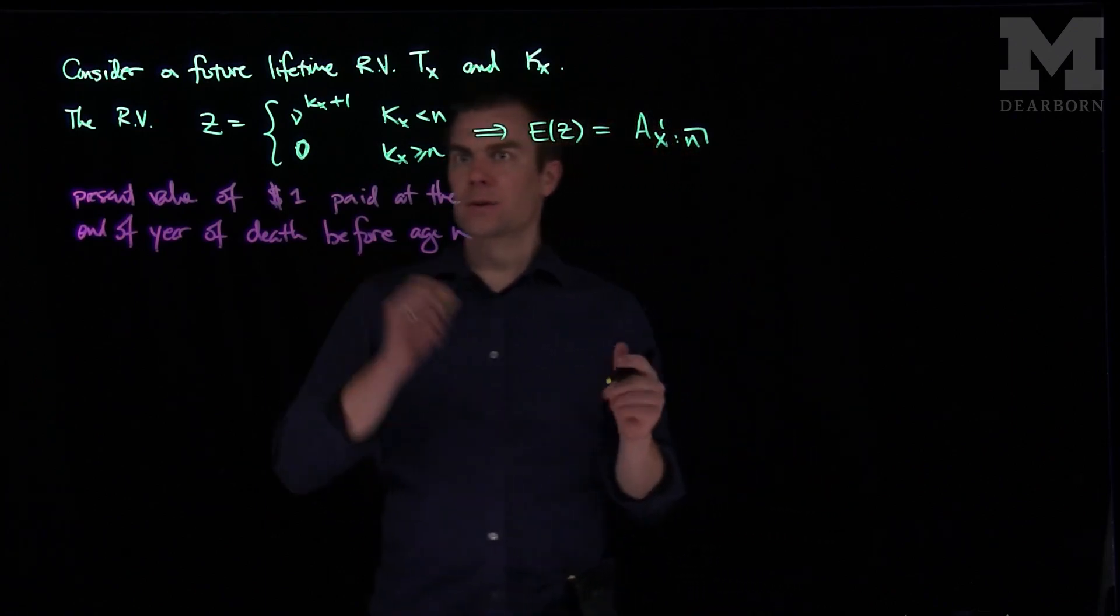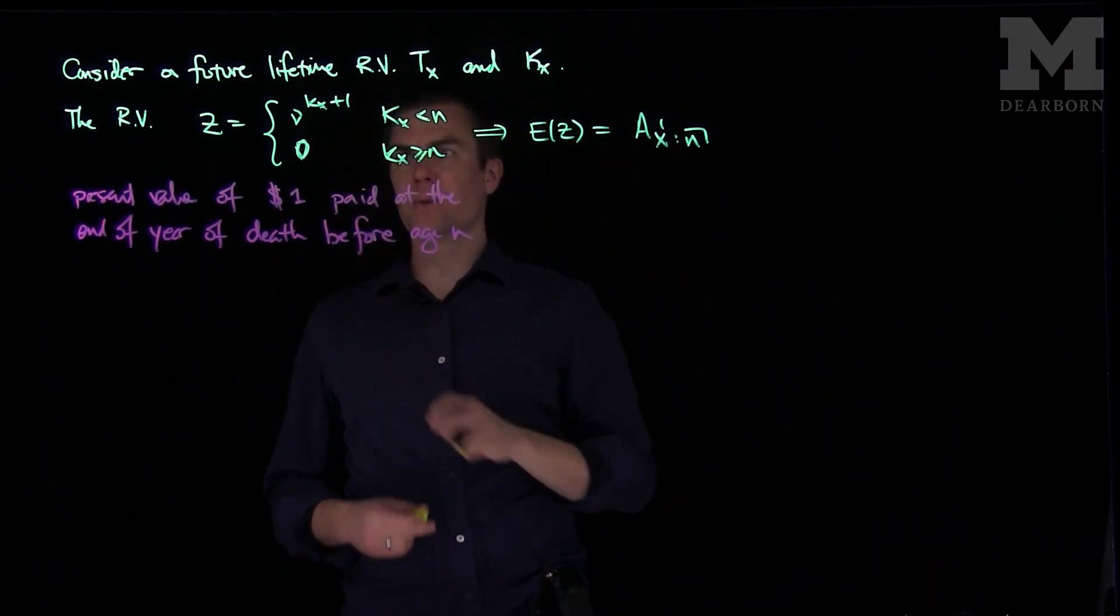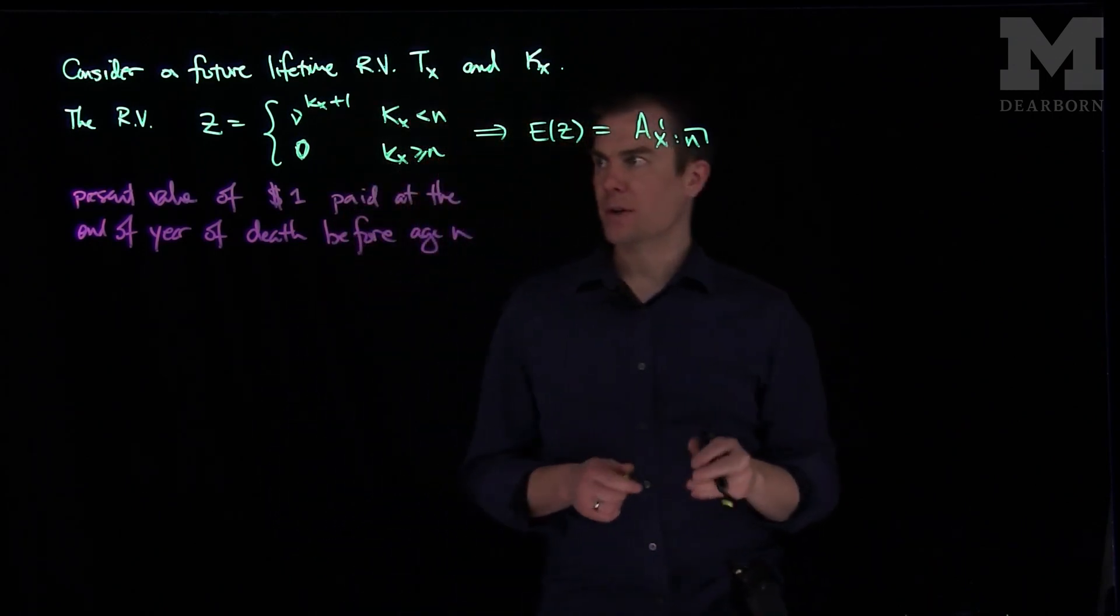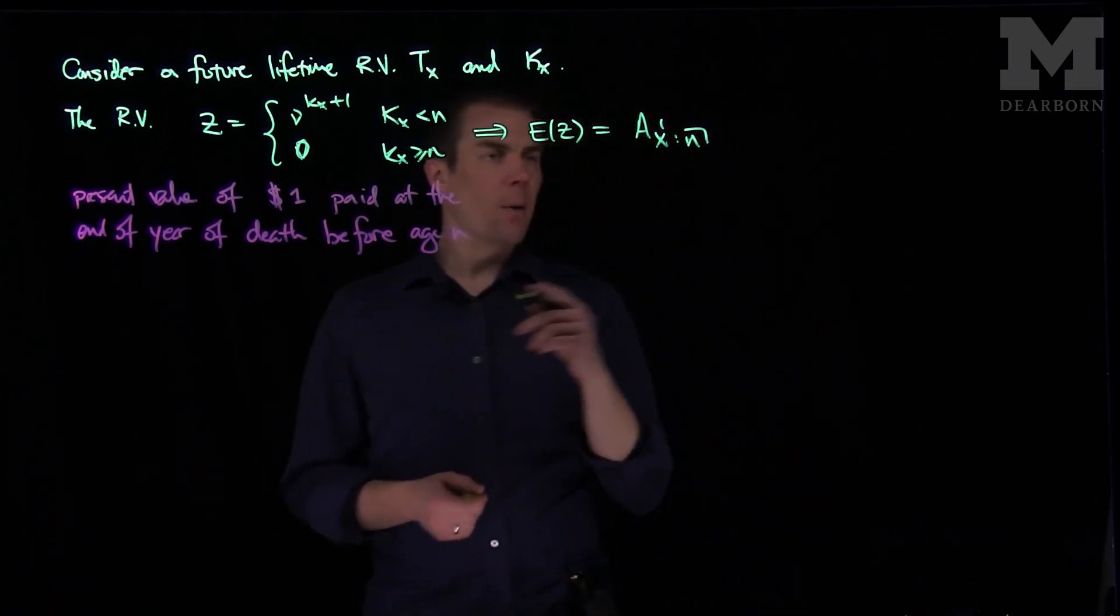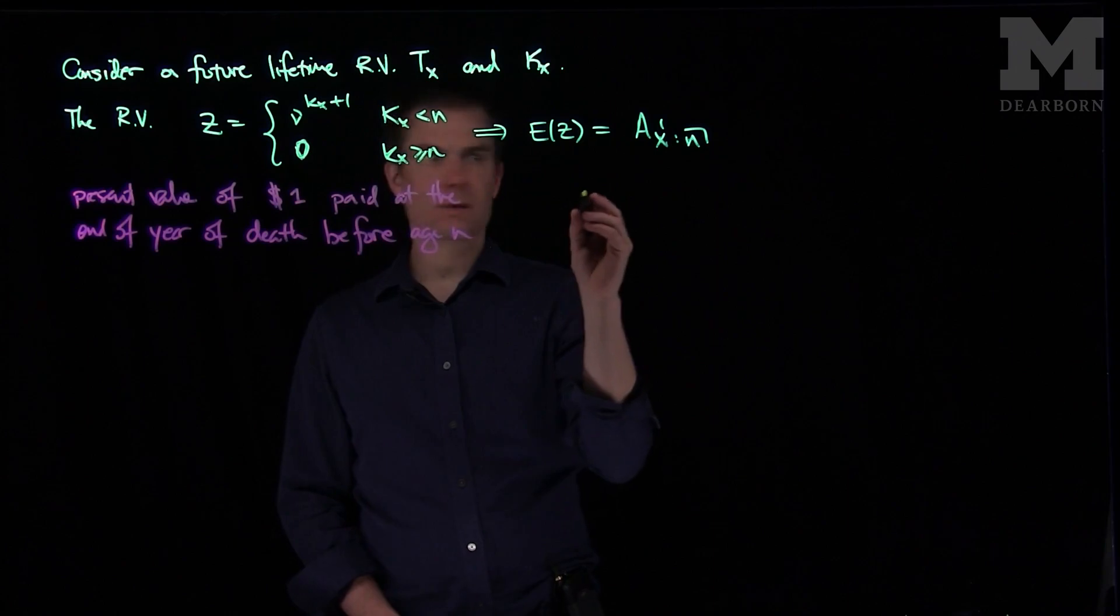What we can also do is we can consider for continuous what will happen is we can just put a bar over this and kx plus 1 is replaced with Tx. That will happen for continuous. And so now what we can do is we can also consider what happens with an endowment insurance. So this is term.